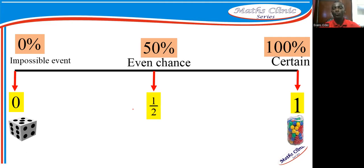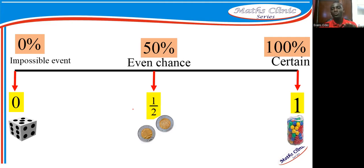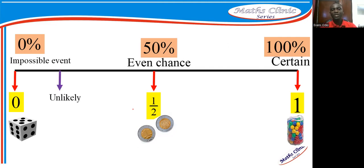Then we have even chance — a 50-50 situation. For example, when tossing a coin once, there are only two sides: head or tail. In this situation we have a 50-50 chance. If it is about a die, you can either throw an even number or an odd number — that is also a 50-50 chance. Then we have unlikely events — events not so close to an even chance and not quite impossible.